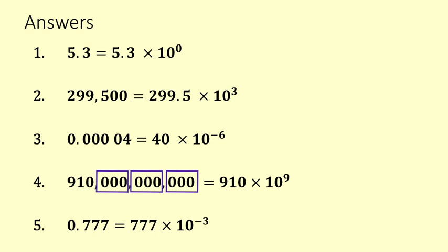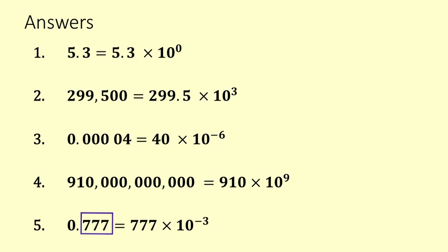We've gone up three blocks of 3, so that's 10 to the 9 — making it 910 times 10 to the 9. And the last one: 0.777 is 777 times 10 to the negative 3.